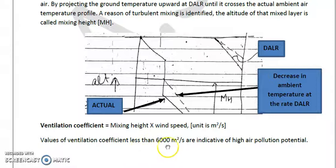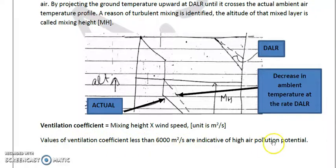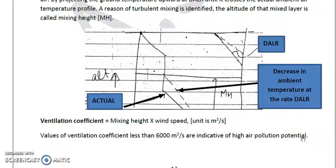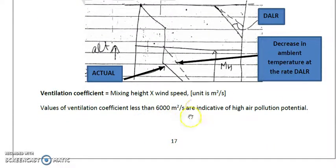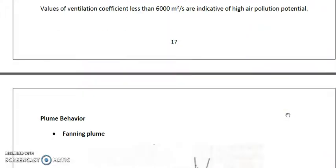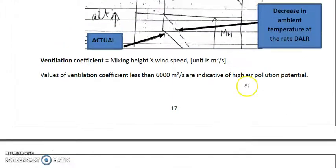An important observation from the ventilation coefficient: values less than 6000 square meters per second indicate high air pollution potential. In other words, the lower the ventilation coefficient, the greater the pollution load in that area. Higher values indicate better dispersion and lower air pollution potential.